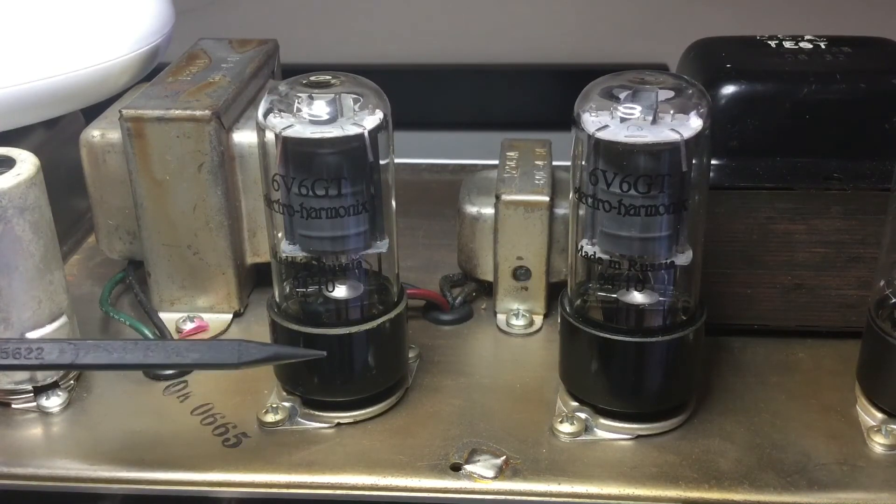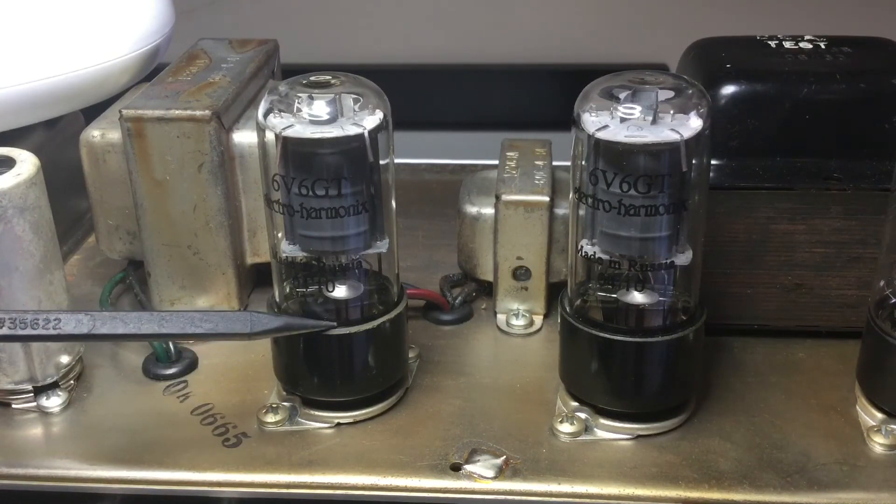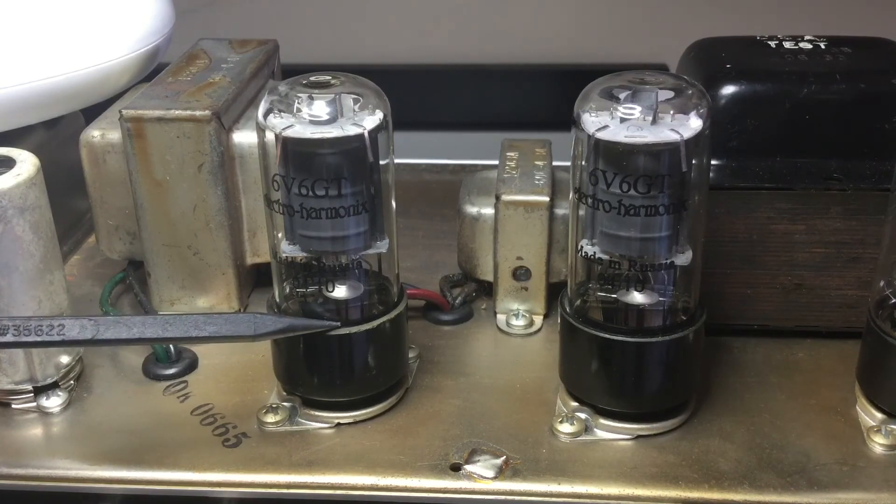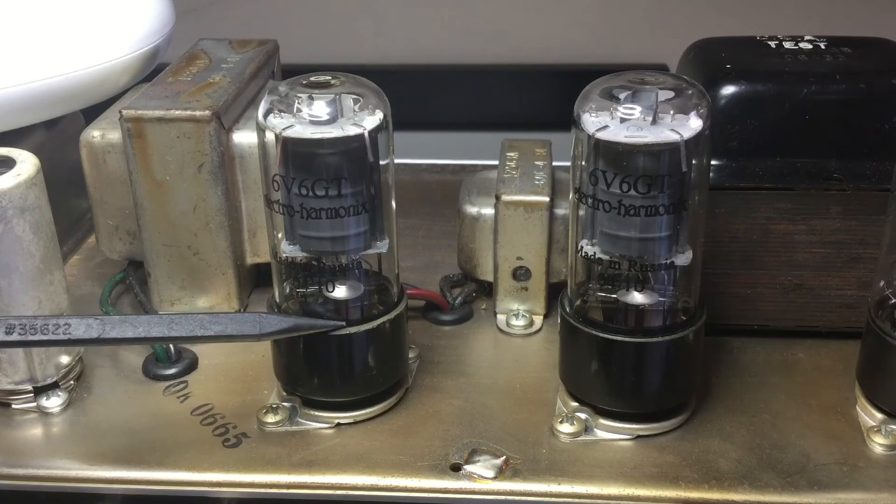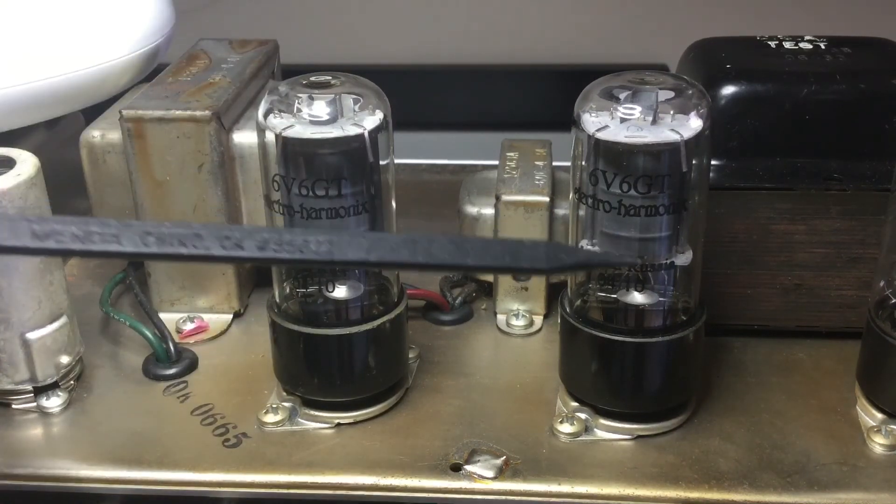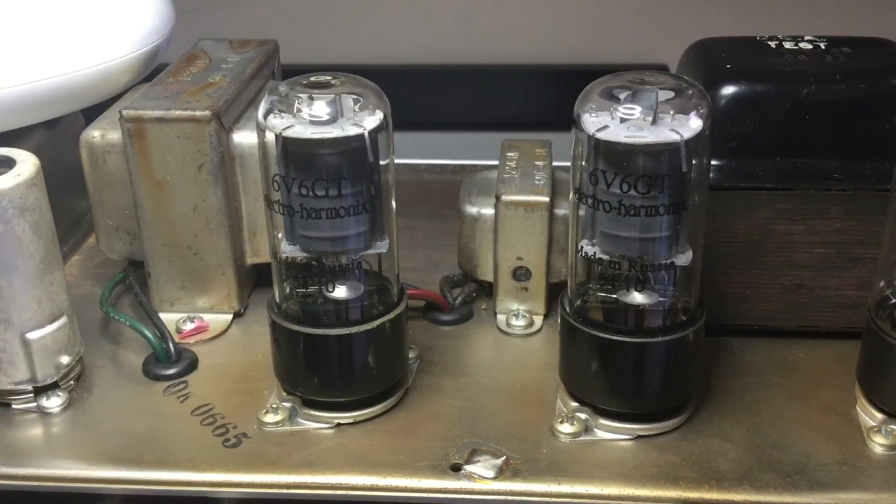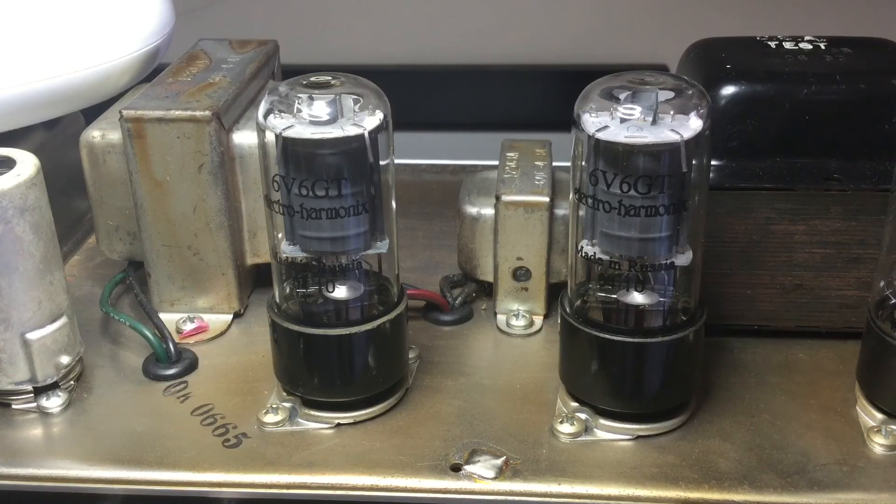And again the overall condition of this amplifier is really nice. I replaced the failing output tubes, they were the JJ type which I like but I replaced those with these 6V6 GTs by Electro Harmonix. This is the tube that has a purple label on the other side and I actually really like these.